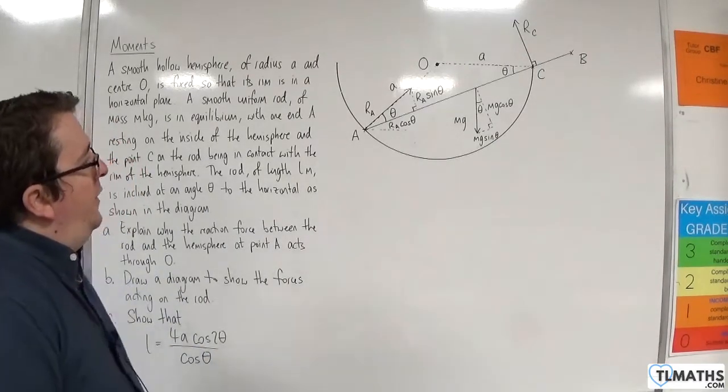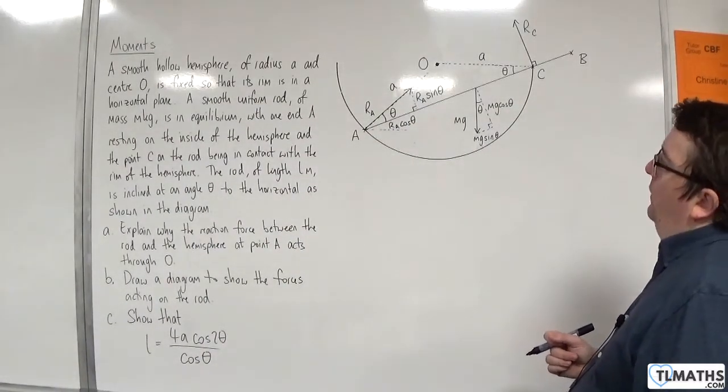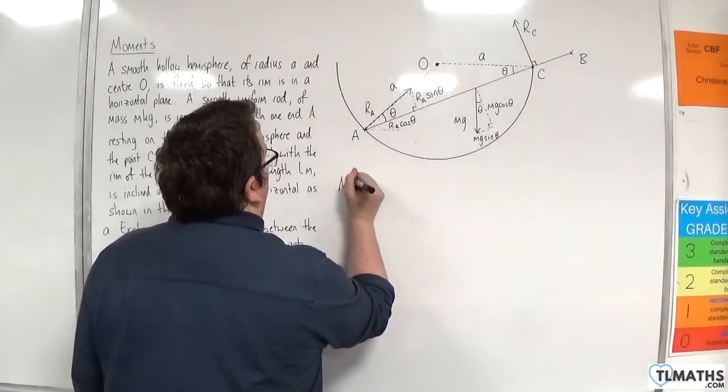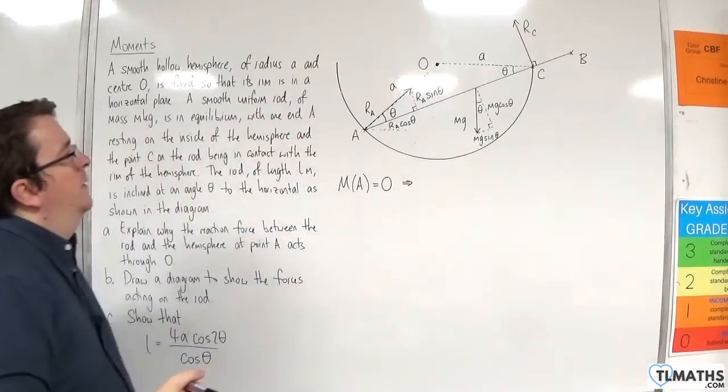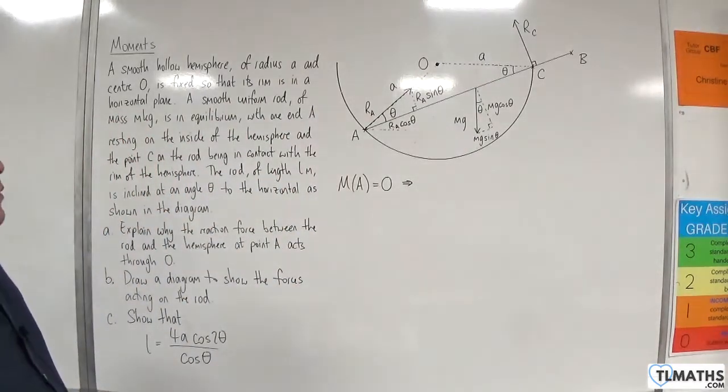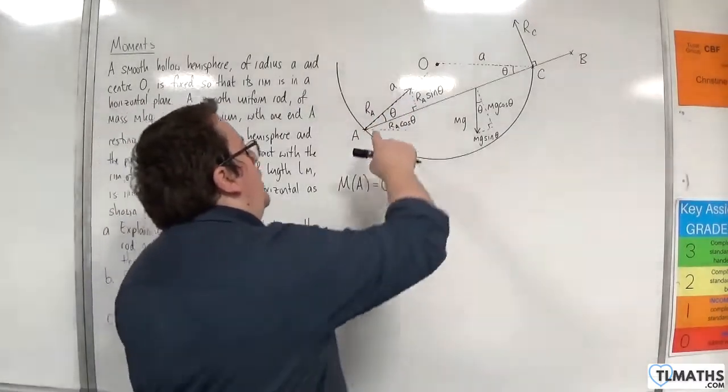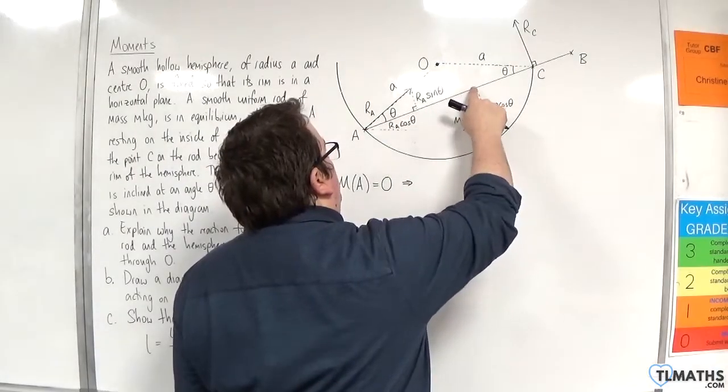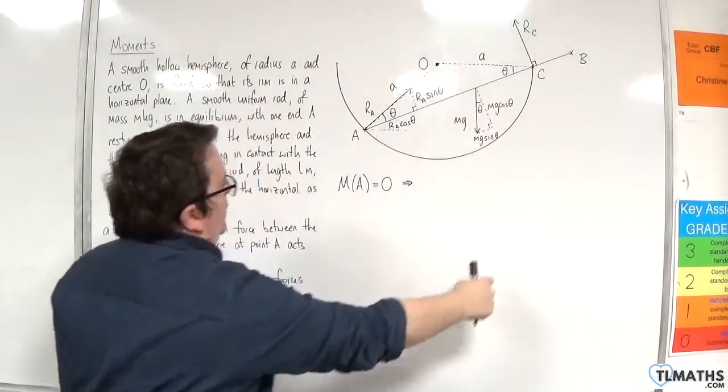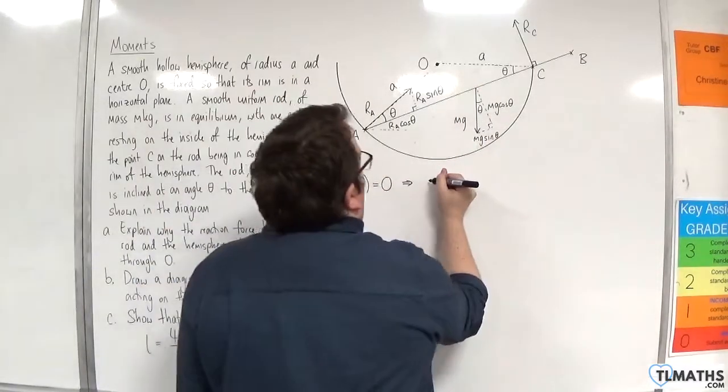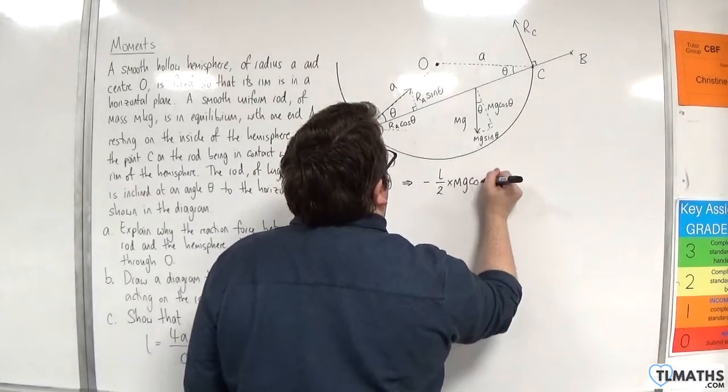So what I'm going to start with is taking moments. I'm going to take moments about point A. It's in equilibrium, so that's going to be equal to 0. I don't need to worry about RA in this. We are L over 2 away from the MG cosine theta. And that's going to be going around in a clockwise motion. So minus L over 2 times MG cosine theta.